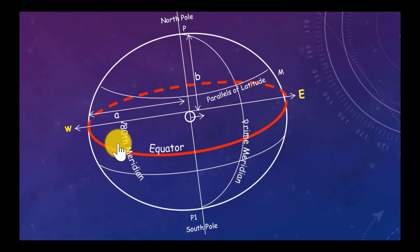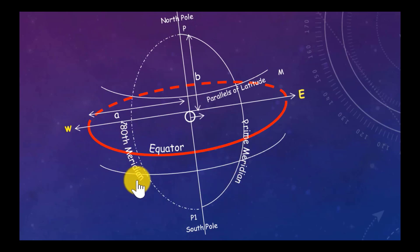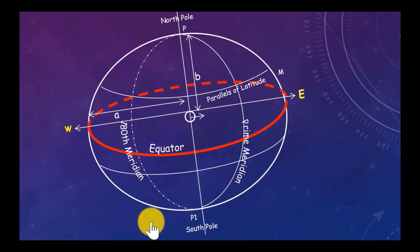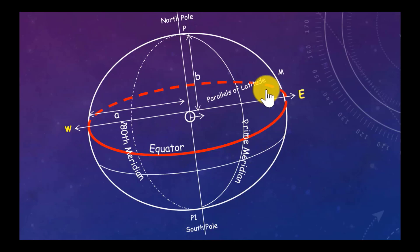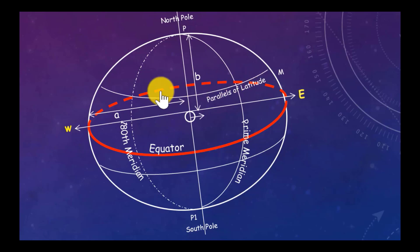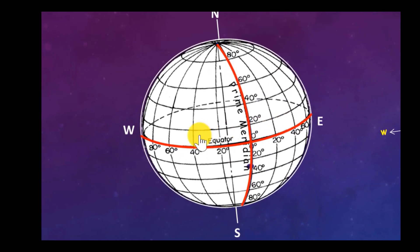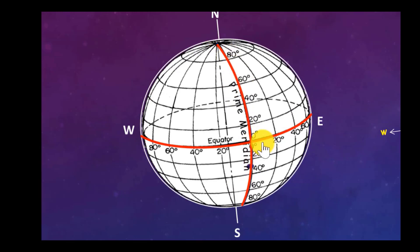We have the prime meridian and other meridians as shown. Parallels of latitude are parallel to the equator, and are regarded as small circles. This is the equator, and this is the prime meridian.